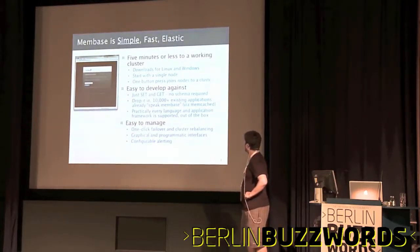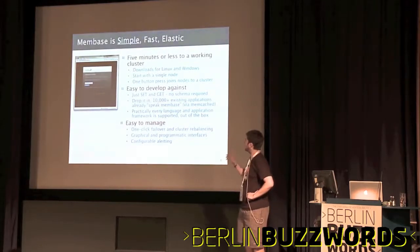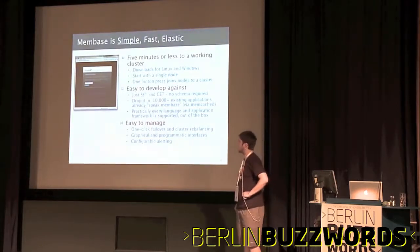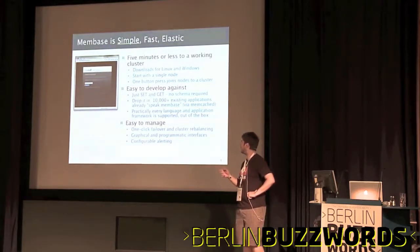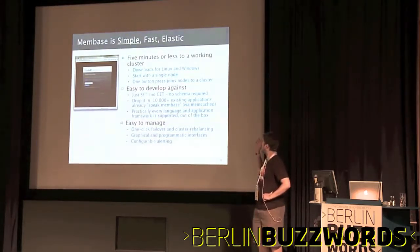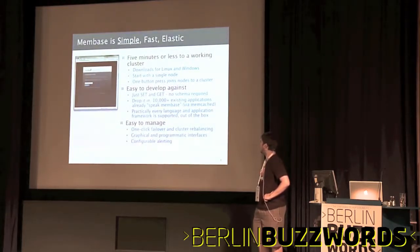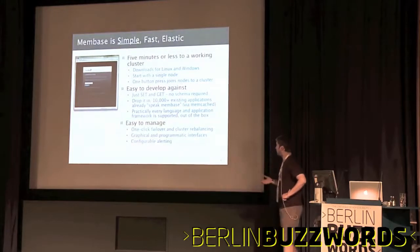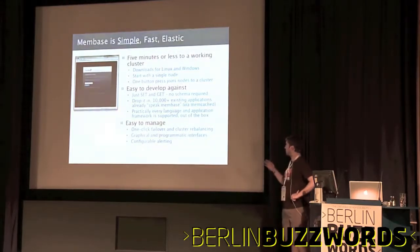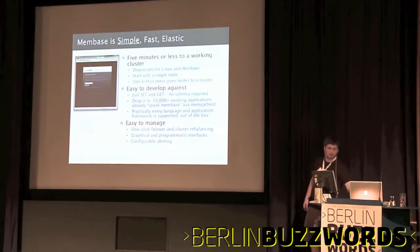Downloads are available for Linux, Windows, and Mac now. You start with a single node. There's an administrative interface where you literally just click a button to add servers, remove them, and rebalance. Set and get is the Memcached API. It'll work with every Memcached install out of the box. You have cluster rebalancing, but I'll explain a little bit more about that.